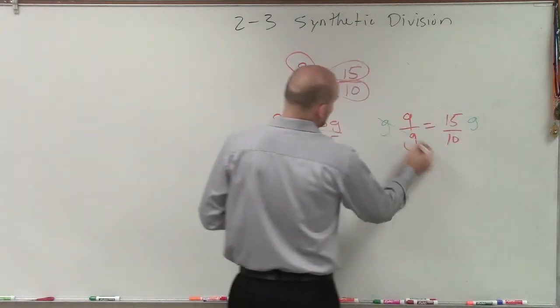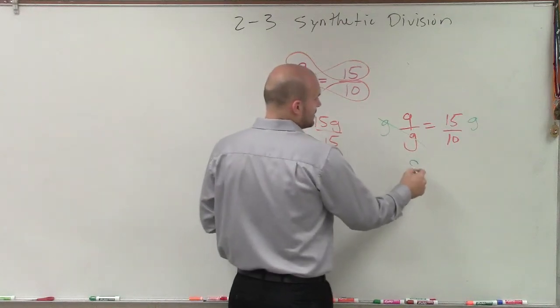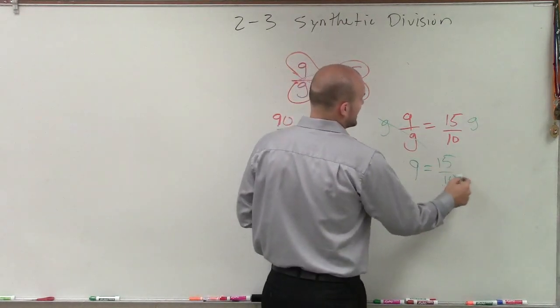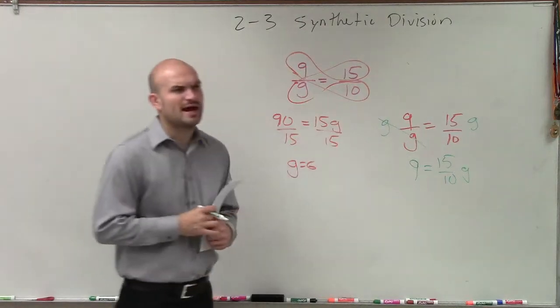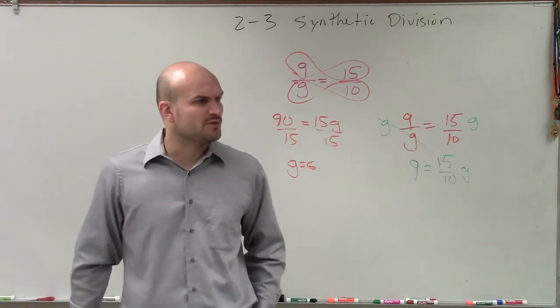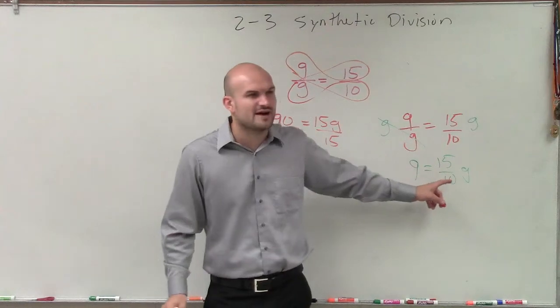And what that does is, now that eliminates the g on the left side, I have 9 equals 15 over 10g. Now does anybody remember what happens when we have a fraction multiplied by our variable? What did we have to do to get rid of that fraction?